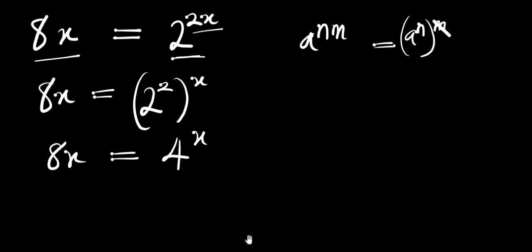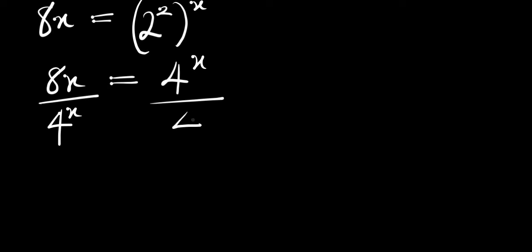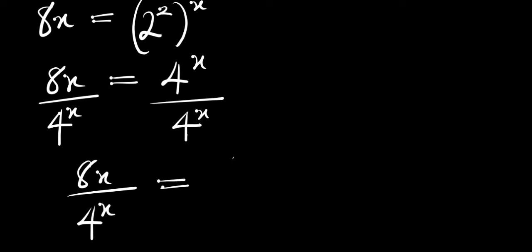Now the next thing we are going to do is divide each part of this equation by 4^x. This will give us 8^x divided by 4^x, and this equals 1.